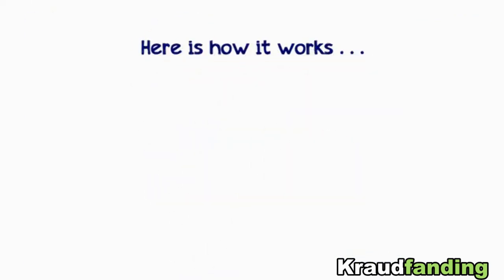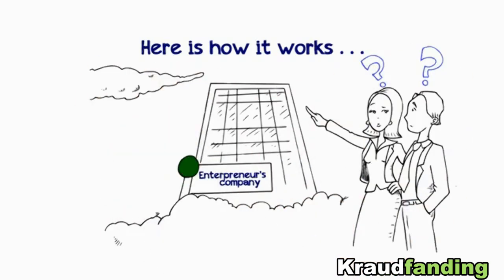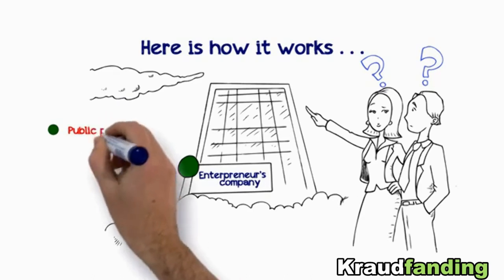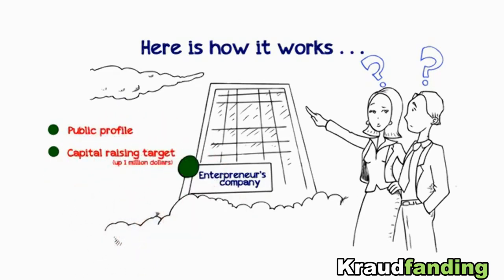Here's how it works. When an entrepreneur has an idea for a company, he or she can seek funding at SME by creating a public profile, setting a capital-raising target up to $1 million, and submitting business documents for investors to review.